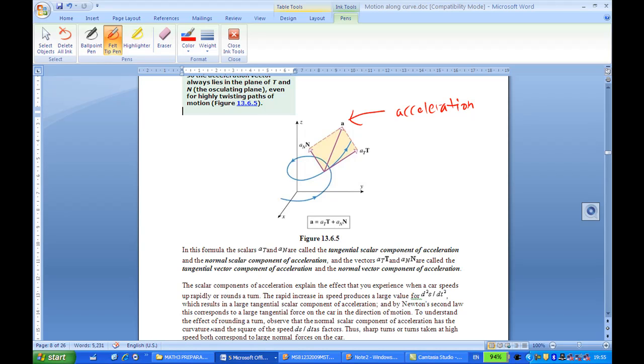Can we figure out the two components? One component is in the tangent direction, tangential component of the acceleration, this is At times t. And this is a normal component of the acceleration, which is An times n.